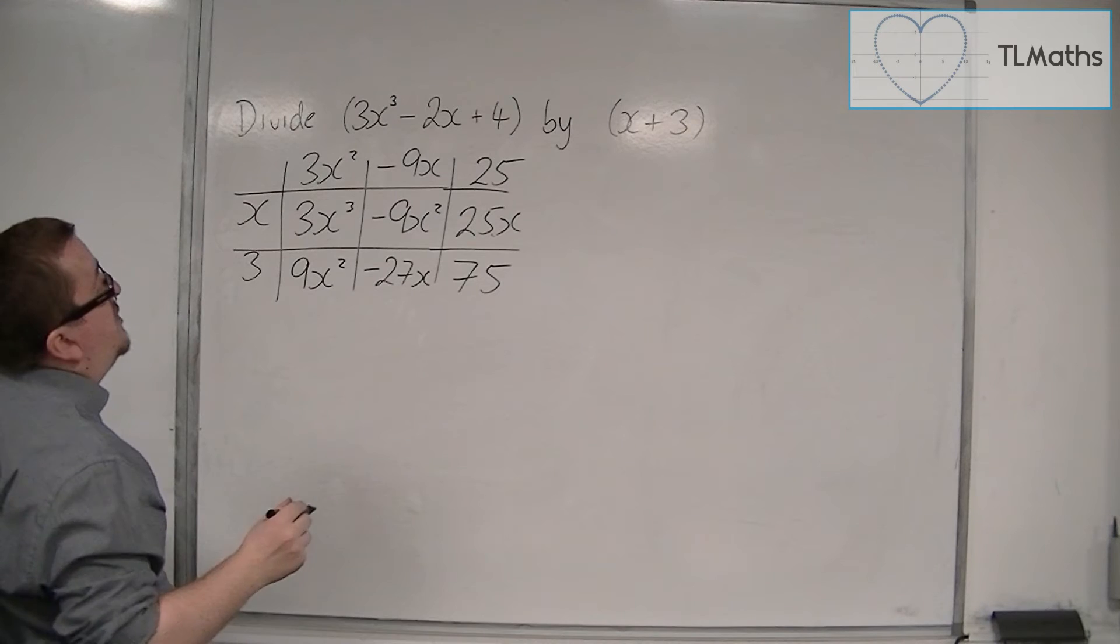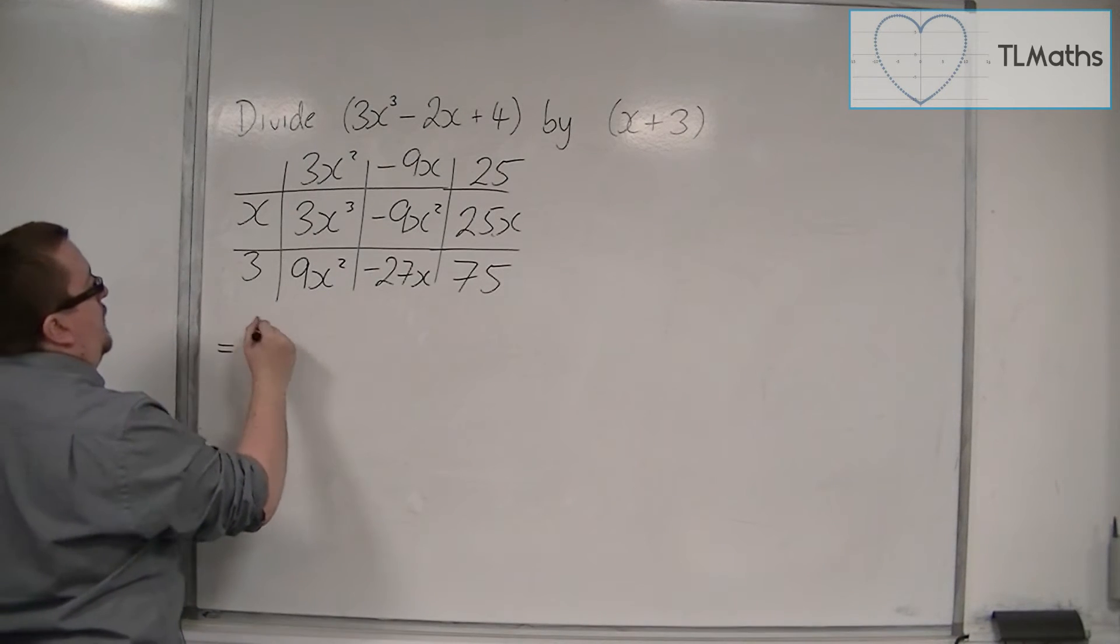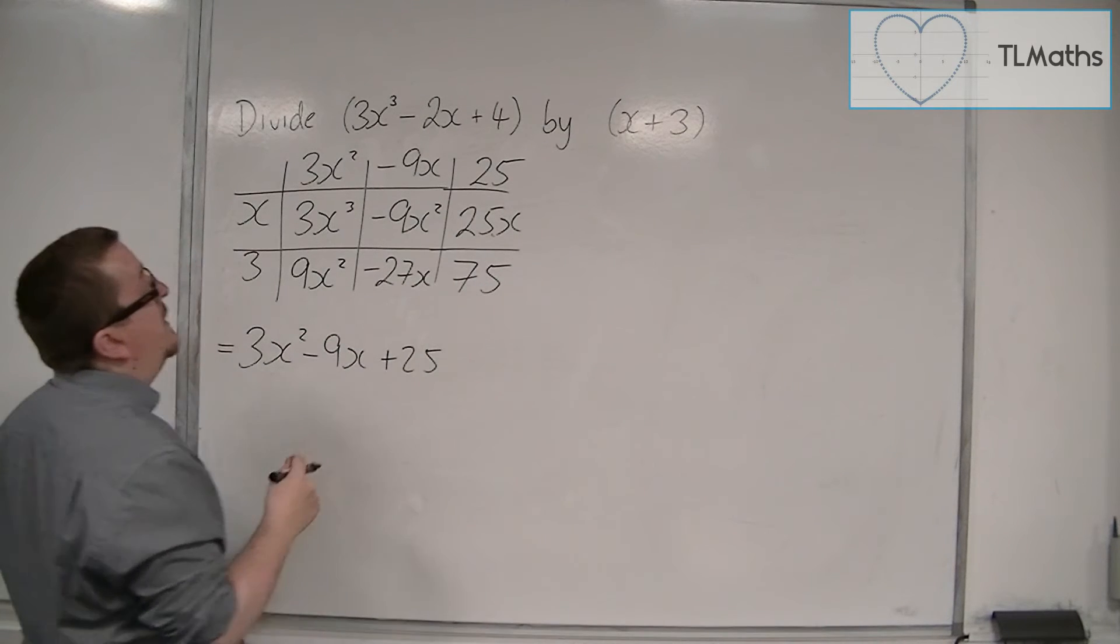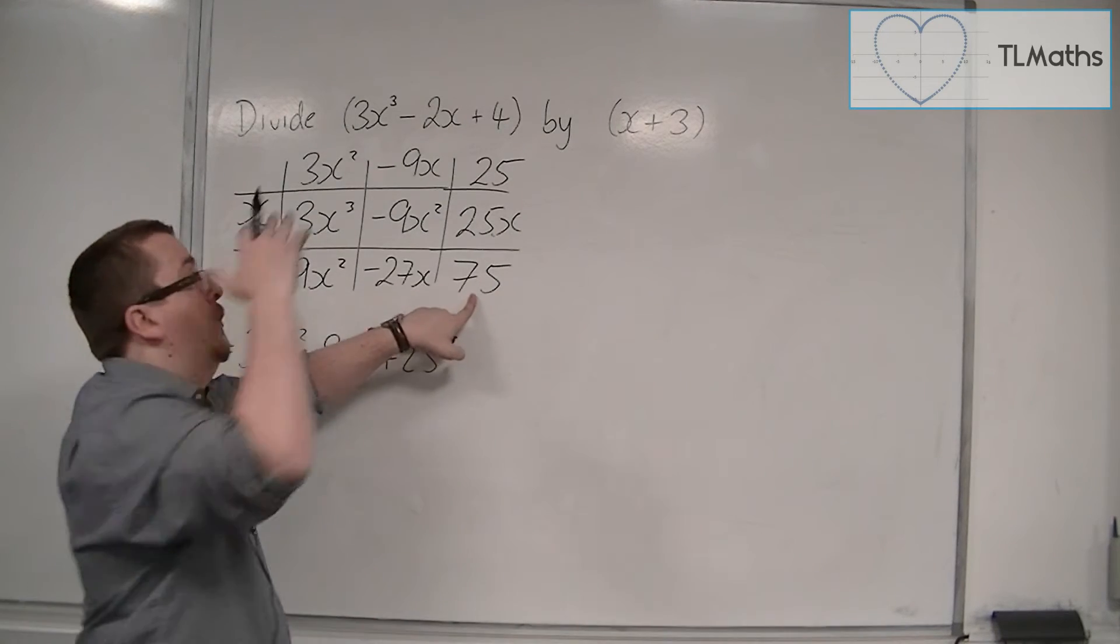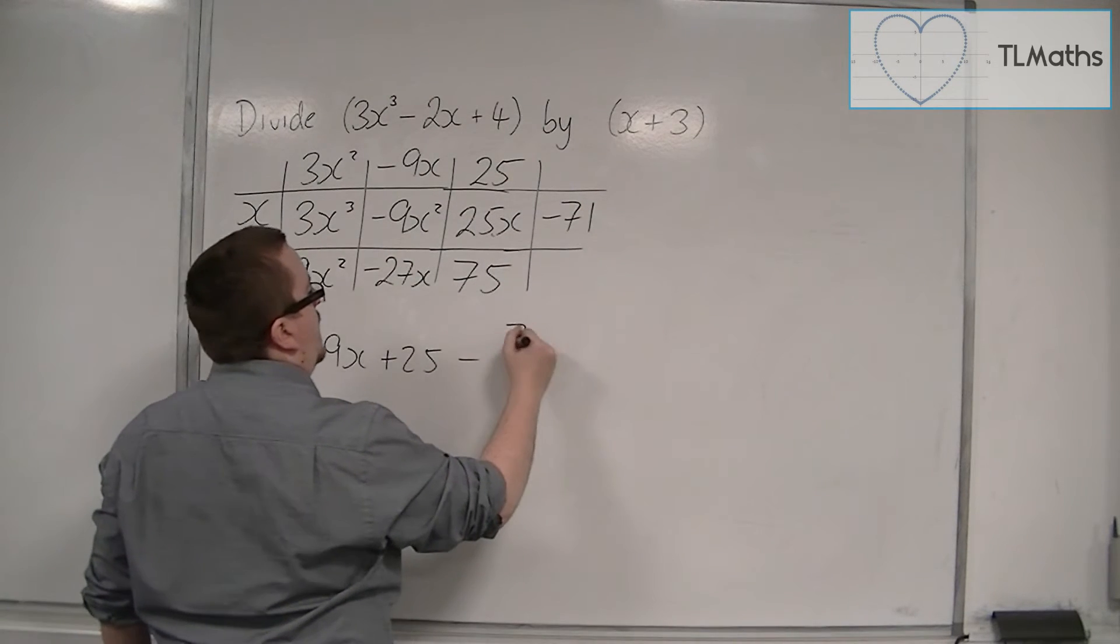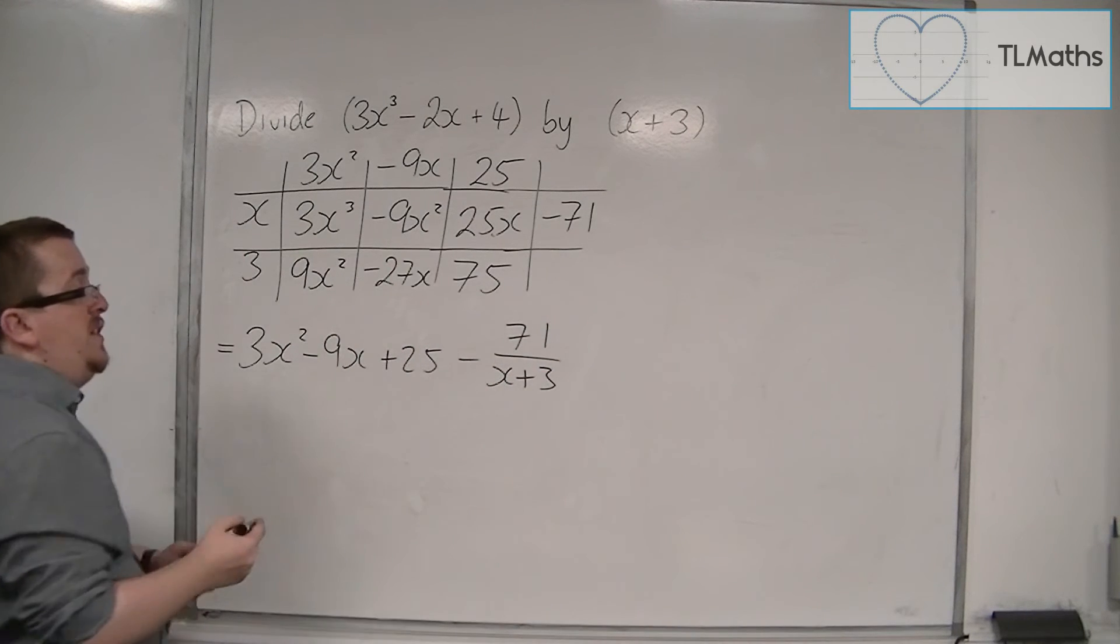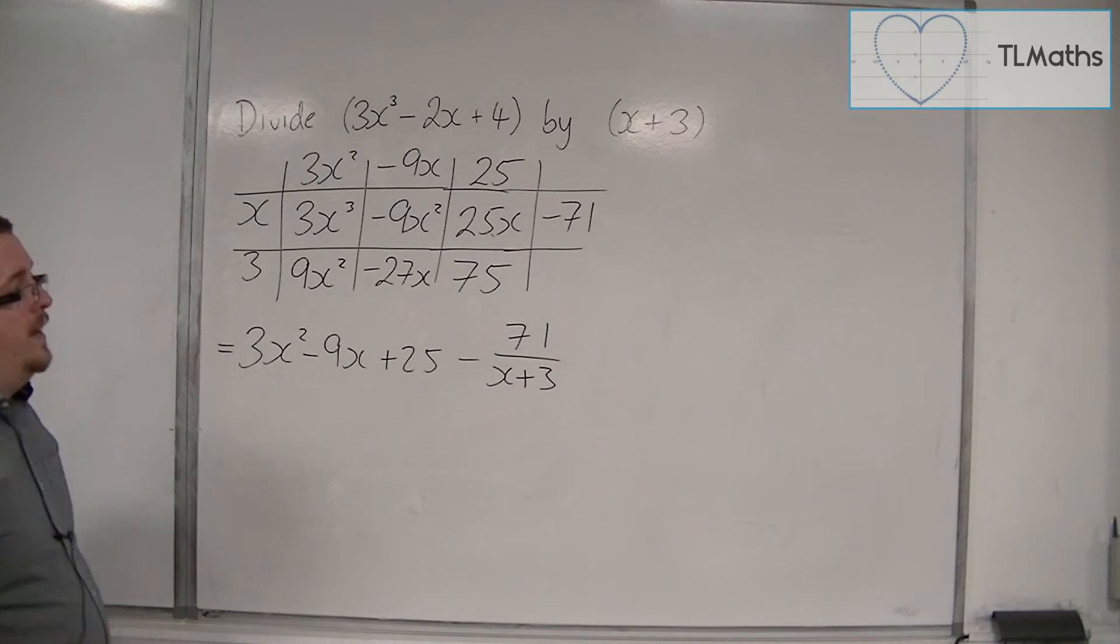So when I divide 3x cubed minus 2x plus 4 by x plus 3, what I get is 3x squared minus 9x plus 25. This bit on the top. But because I've got 75 and I actually want 4, I've got to take away an extra 71. So I get minus 71 over x plus 3. Minus 71 is the remainder, what I've got left over. So that is using the grid method.